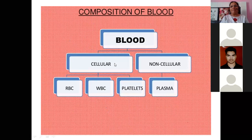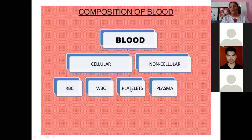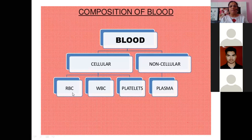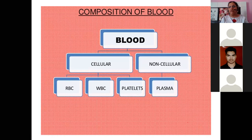The composition of blood is divided into cellular and non-cellular components. The cellular component is divided into three parts: RBC, WBC, and platelets. The non-cellular component is plasma. Cellular means which contains cells — RBC means red blood cells, WBC means white blood cells — and these are cellular because they have a cell-like structure. Plasma is non-cellular, meaning it has no cellular structure.